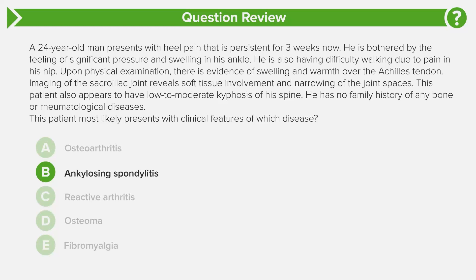This question really is testing whether you can identify the clinical picture and components of ankylosing spondylitis. What you should be thinking of is generalized joint inflammation, narrowing, and kyphosis of the spine due to fusion of the vertebrae. These are the red flags for a young guy with no other history. These are all things we need to be worried about.